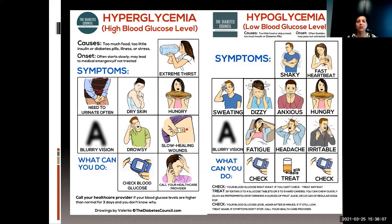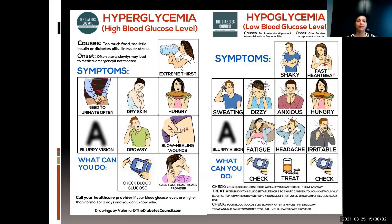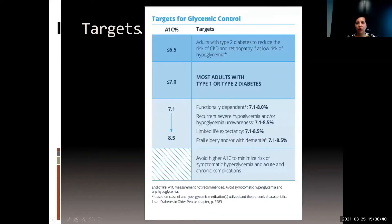Hyperglycemia is when your blood sugar is too high. Symptoms include extreme thirst, frequent urination, very dry skin, hunger, blurry vision, drowsiness, and slow wound healing. Measure this by looking at your hemoglobin A1c. When you're checking your blood sugars post-exercise in cardiac rehab and finding you're consistently high, you may need to readjust your medications.